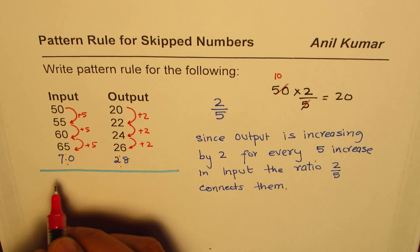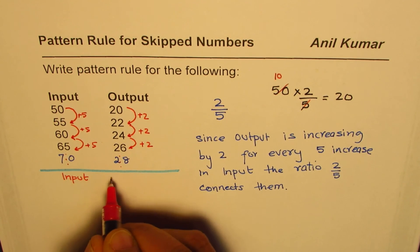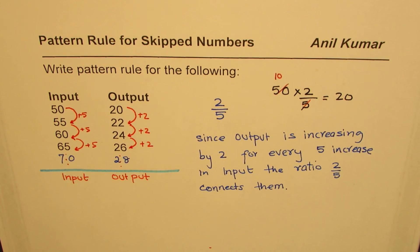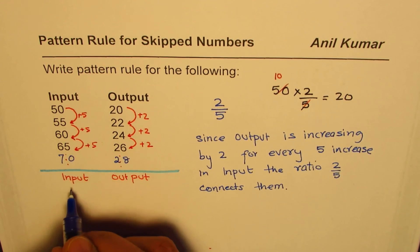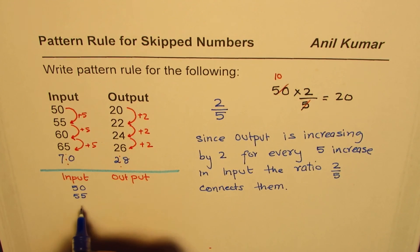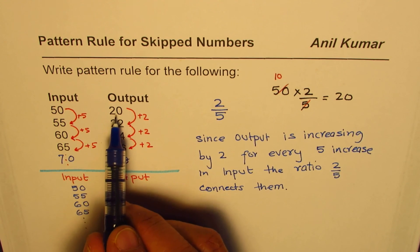Now we'll take another example. This time I'll change the numbers a bit. So I'm saying input, output. Now for each input I'll keep them the same, which is skipped by five - these are easy numbers to work with and that's the reason why I'm continuing with the same examples.